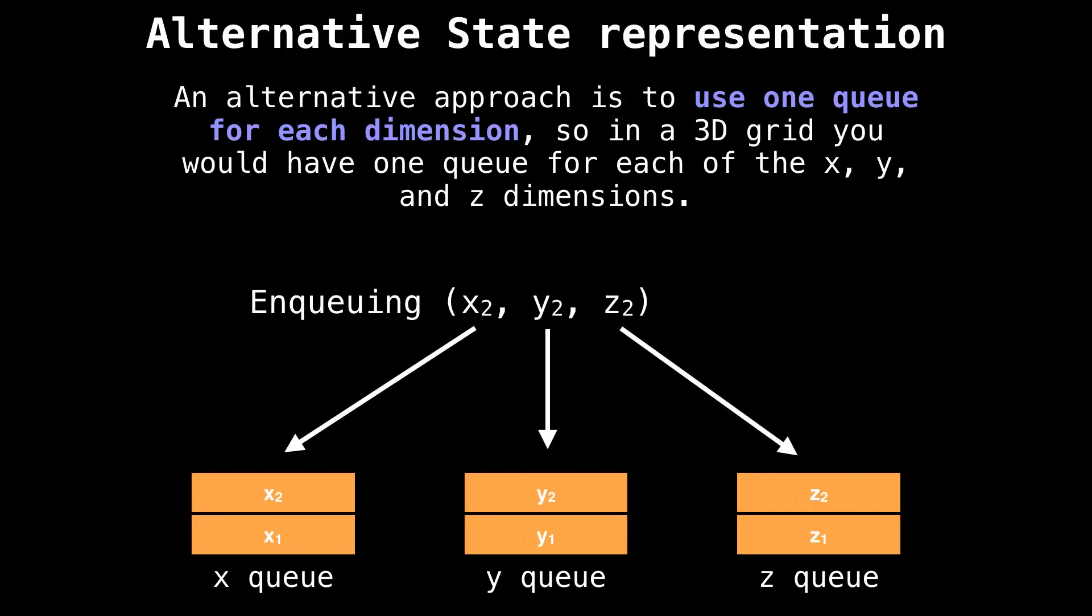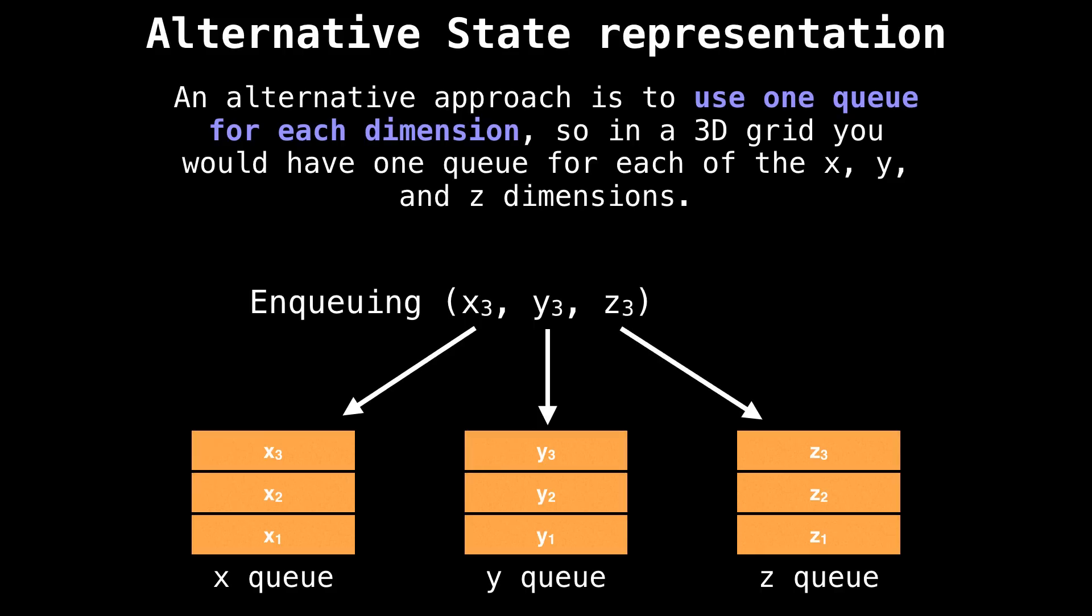As we need to keep enqueuing different positions, we simply keep filling up these queues this way. This contrasts the approach of simply having one queue with each of the components packed away inside an object. The one thing we have to be mindful about, however, is that when we either enqueue or dequeue elements, you need to enqueue and dequeue elements from each of the queues all at the same time.